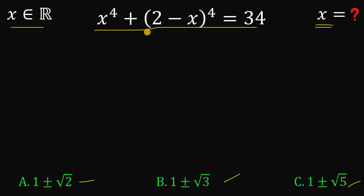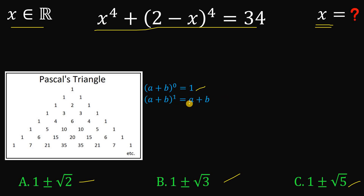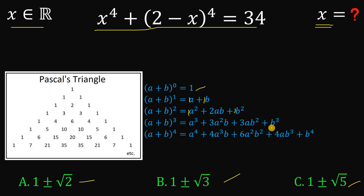To answer this kind of question, we need to expand (2 minus x) raised to the fourth power. To expand this kind of expression, we will use what we call Pascal's Triangle. In Pascal's Triangle, the first row equals (a plus b) raised to the power of 0, with coefficient 1. The second row, 1 and 1, comes from (a plus b) raised to the power of 1. The third row is the expansion of (a plus b) raised to the power of 2, equal to a squared plus 2ab plus b squared, with coefficients 1, 2, and 1.